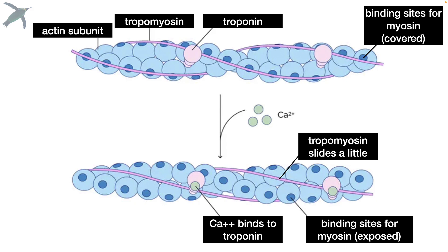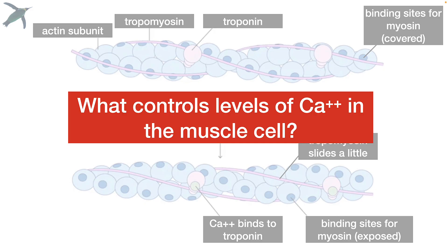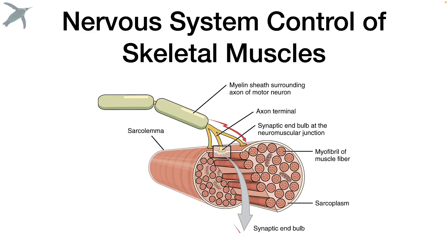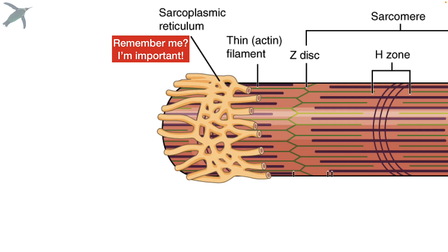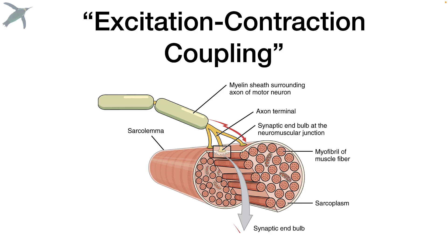So it's a little cascade initiated by calcium. What controls the level of calcium in a muscle cell? That's what somatic motor neurons do. The release of the neurotransmitter acetylcholine causes another cascade which ultimately causes the release of calcium from the sarcoplasmic reticulum. We call this excitation-contraction coupling.